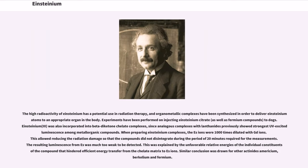The high radioactivity of Einsteinium has a potential use in radiation therapy, and organometallic complexes have been synthesized in order to deliver Einsteinium atoms to an appropriate organ in the body. Experiments have been performed on injecting Einsteinium citrate, as well as fermium compounds, to dogs. Einsteinium-3 was also incorporated into beta-diketone chelate complexes, since analogous complexes with lanthanides previously showed strongest UV-excited luminescence among metal organic compounds. When preparing Einsteinium complexes, the Es ions were 1000 times diluted with Gd ions. This allowed reducing the radiation damage so that the compounds did not disintegrate during the period of 20 minutes required for the measurement. The resulting luminescence from Es was much too weak to be detected. This was explained by the unfavorable relative energies of the individual constituents of the compound that hindered efficient energy transfer from the chelate matrix to Es ions.